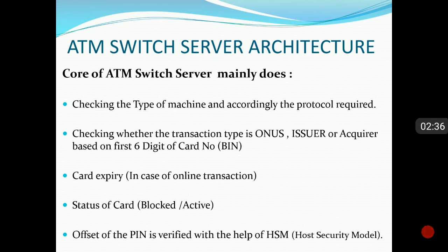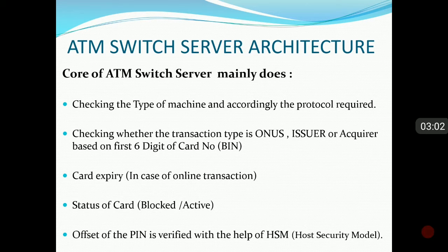The card expiry is also checked at the switch server — it is used in online transactions. Next, the status of the card is verified: whether the card is blocked, hotlisted, or active. Importantly, when the customer enters the PIN at the PIN pad, it gets encrypted and a PIN block is formed. This PIN block arrives at the ATM switch server, where it is further processed with the help of an HSM — a Hardware Security Module. The PIN block is encrypted, an offset is formed, and only that offset is checked at the ATM switch server.